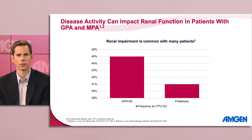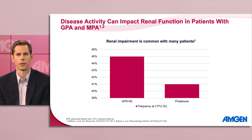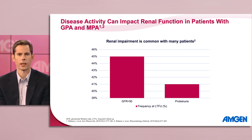Thinking beyond glucocorticoid toxicity, we should note that disease activity can affect renal function in patients with GPA and MPA. In a 2015 study examining results across multiple key ANCA-associated vasculitis trials, researchers found kidney involvement was common, with many patients showing a glomerular filtration rate less than 50 and proteinuria. Overall, early and sustained remission is associated with improved patient outcomes, but can remain a challenge in the context of treatment toxicity and burden of disease.